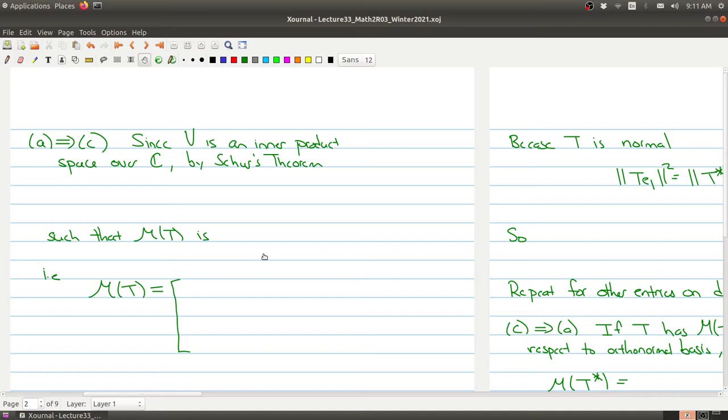So what we need here is actually Schur's theorem, which we proved in a recent lecture. So suppose V is an inner product space over C, and by Schur's theorem, there is an orthonormal basis E1, E2, up to En of V, such that the matrix associated to this linear transformation is upper triangular.